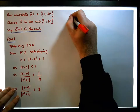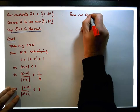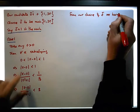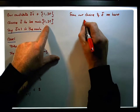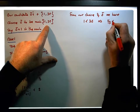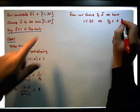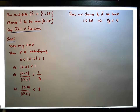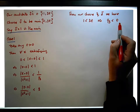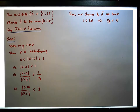From our choice of delta — delta is the minimum of these two — we have that one must be less than three times epsilon, which implies that one third is less than epsilon. So that implies that the expression is less than epsilon.